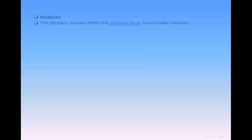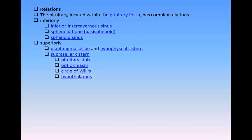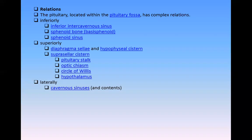The pituitary gland is located within the pituitary fossa and has complex relations. Inferiorly: intercavernous sinus, sphenoid bone, sphenoid sinus. Superiorly: diaphragma sellae, hypophysial cistern, subarachnoid cistern — which contains the pituitary stalk, optic chiasm, circle of Willis, and hypothalamus. Laterally on each side: cavernous sinuses and their contents.